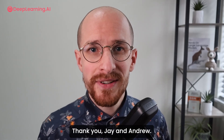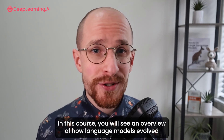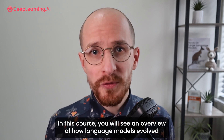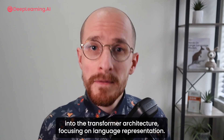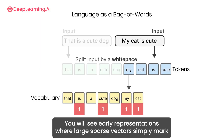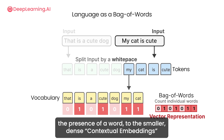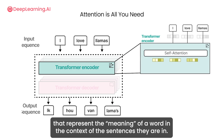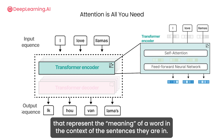Thank you, Jay and Andrew. In this course, you will see an overview of how language models evolved into the transformer architecture, focusing on language representation. You will see early representations where large sparse vectors simply marked the presence of a word, to the smaller, dense, contextual embeddings that represent the meaning of a word in the context of the sentences they are in.